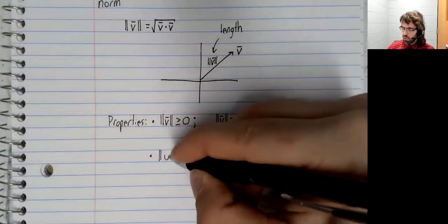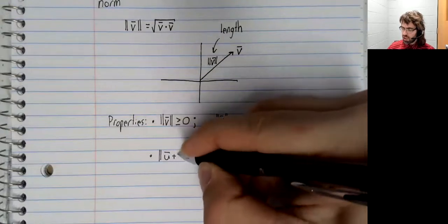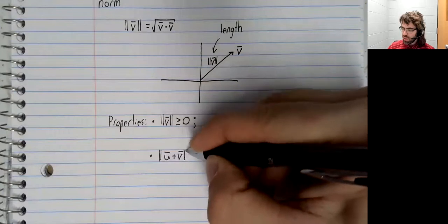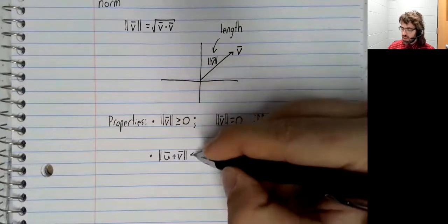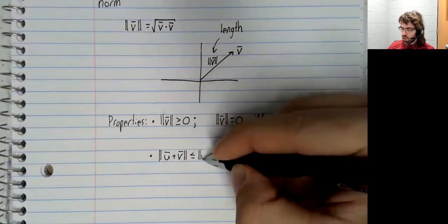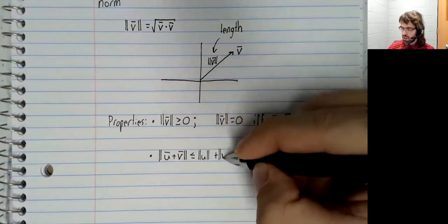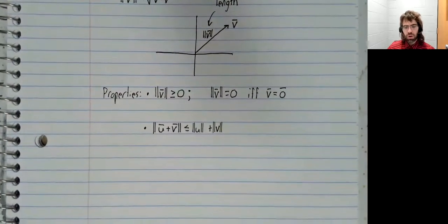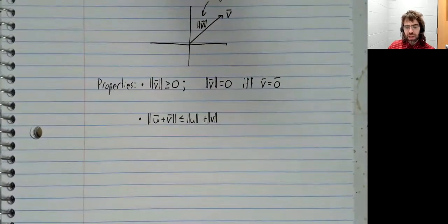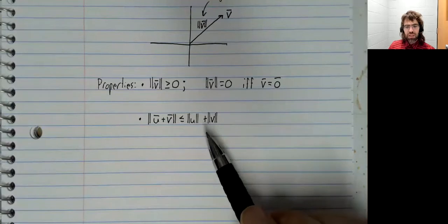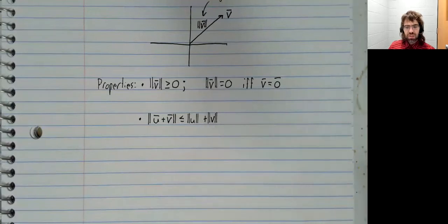The norm of u plus v is less than or equal to the norm of u plus the norm of v. This is probably less obvious, but the parallelogram rule to the rescue.